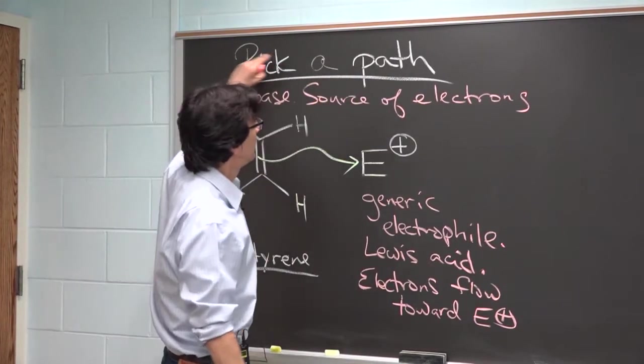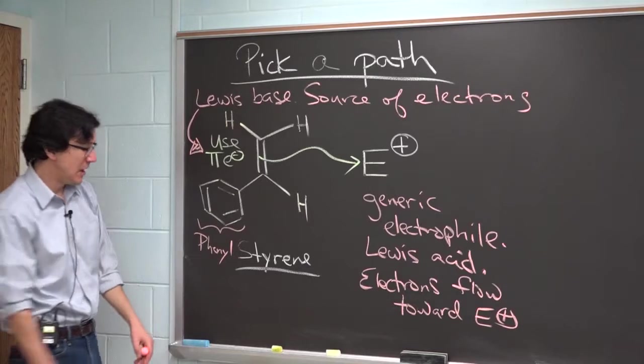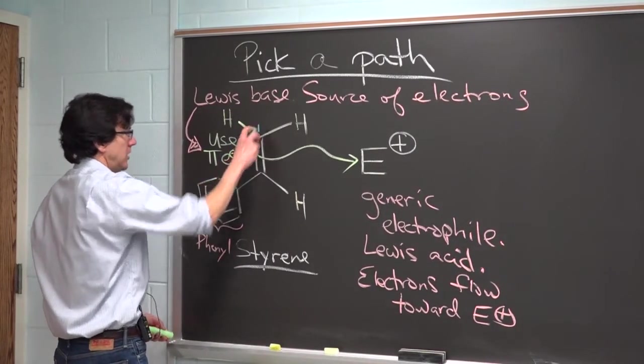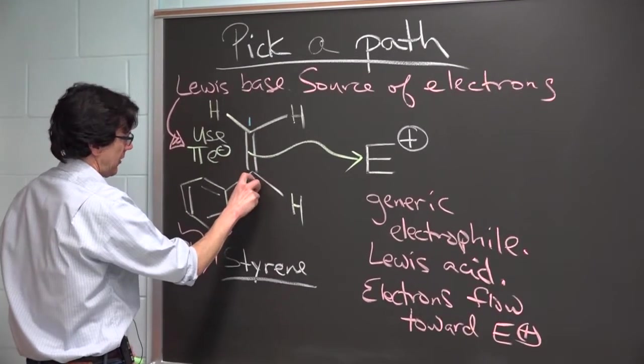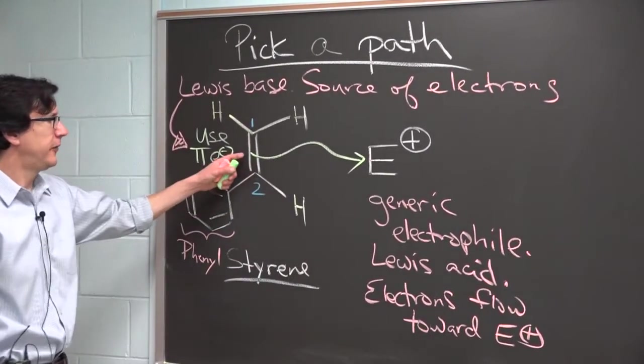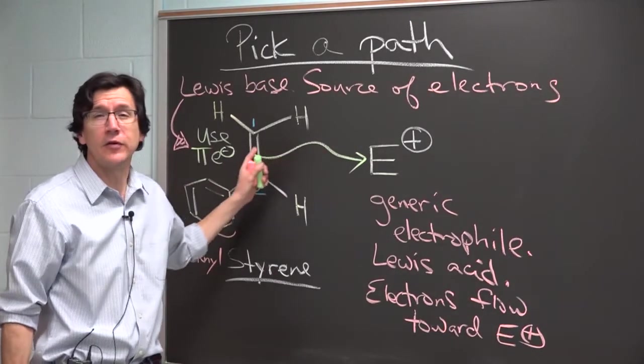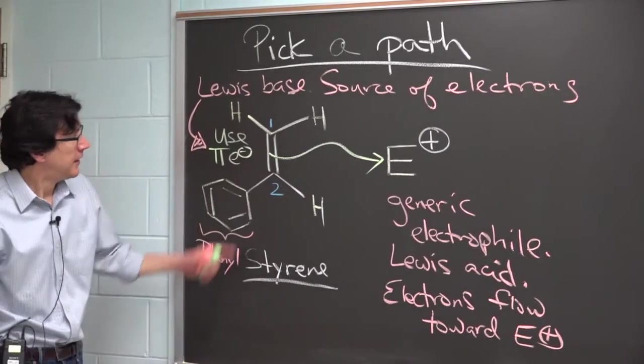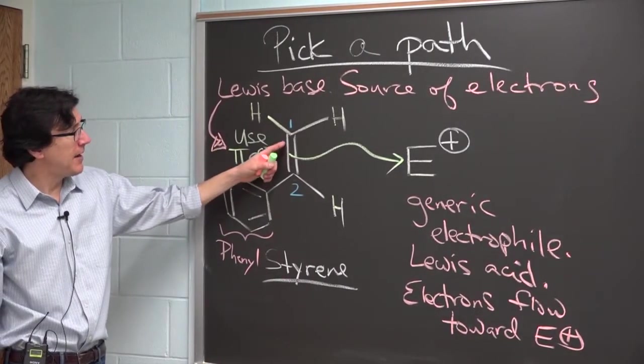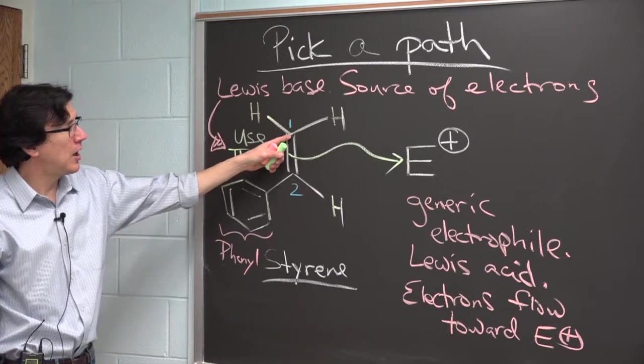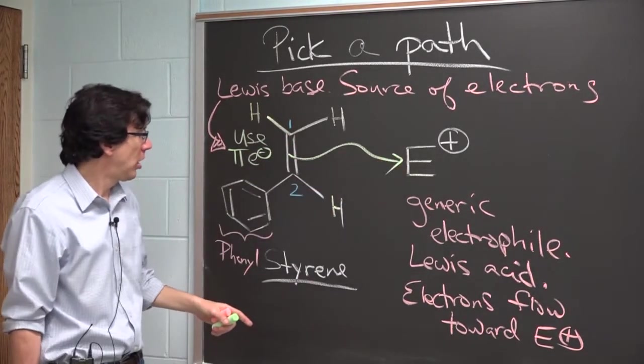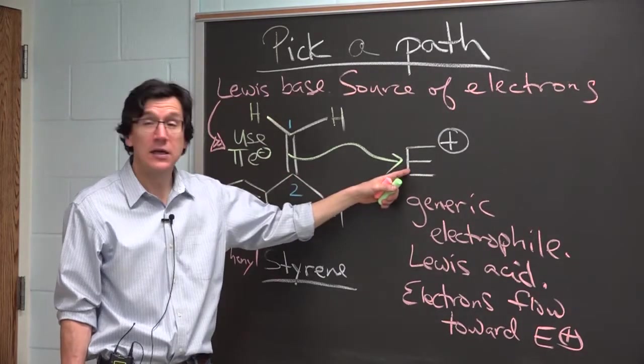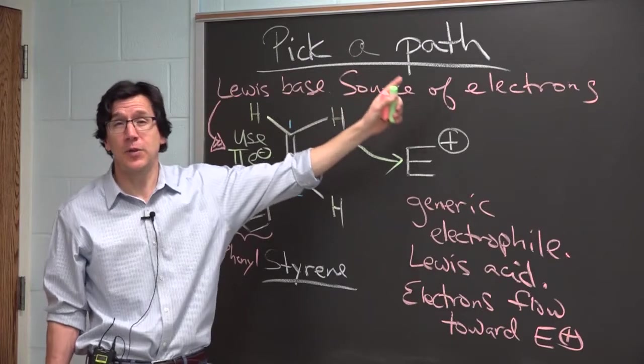This problem was about picking a path. Let me number the carbons here for you. Let's call this carbon 1 and let's call this carbon 2. There's an ambiguity in this green arrow. What is it? This green arrow could either mean make a bond between carbon 1 and E or make a bond between carbon 2 and E. We have to make a choice. We have to pick a path.